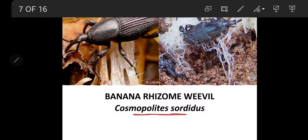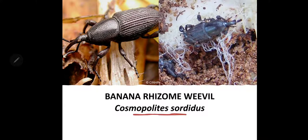Among them, this is a banana which is infested by banana rhizome weevil. Its scientific name is Cosmopolites sordidus, family Curculionidae and order Coleoptera. We can identify insects belonging to Curculionidae by the typical character of this family — having a snout or elongated projection at their mouth, which is generally used to make depressions to deposit their eggs.